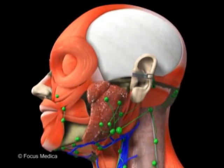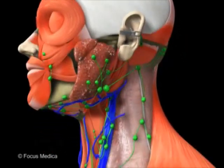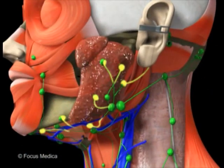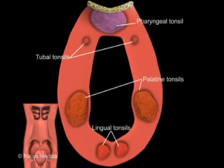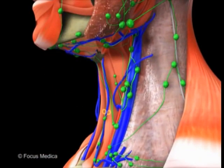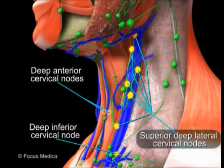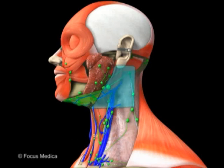The lymphatics of the head drain into a chain of nodes extending from the occiput to the chin. Each cluster of nodes has a distinct name, but the areas of drainage are overlapping. There is also a deep ring around the pharynx. The lymphatics of the neck drain into a superficial and a deep group. All the lymphatics drain into the deep cervical lymphatics of the neck. For clinical staging and treatment, nodes are labeled from level 1 to level 5.